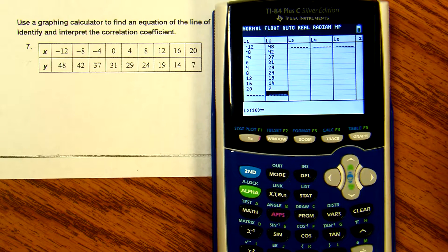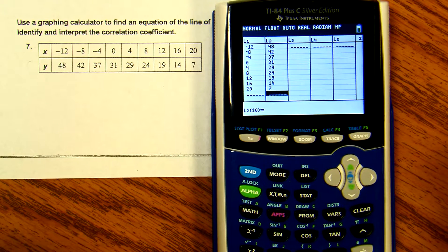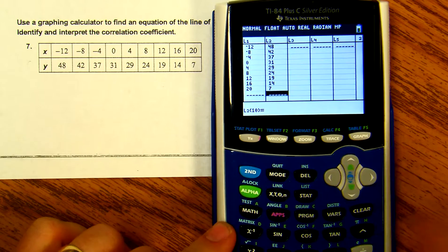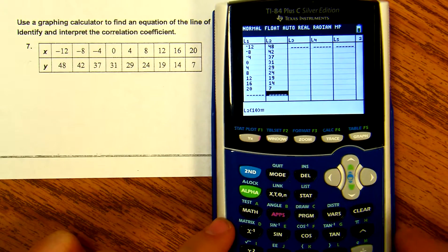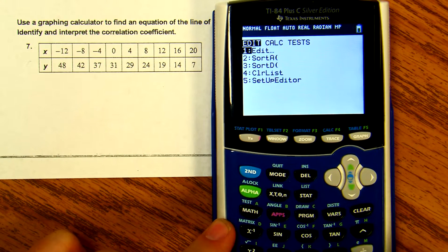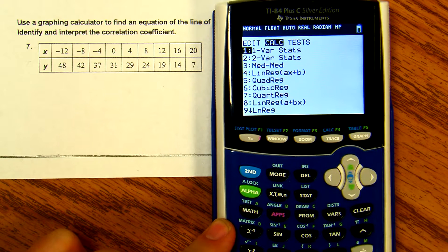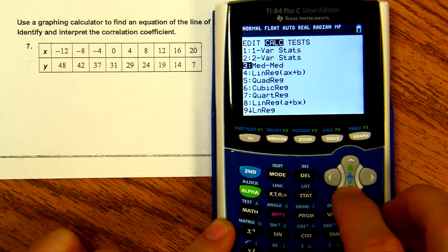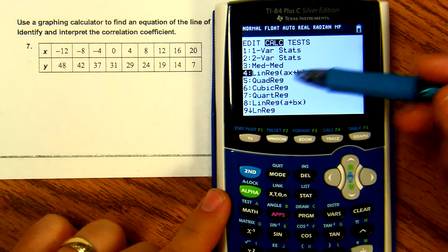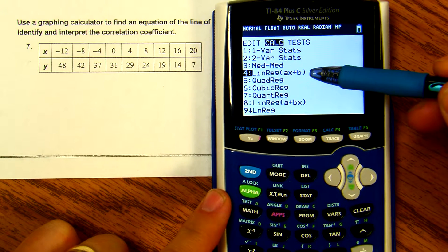Now hit STAT again, arrow over to CALC, and go down to number 4. You'll see LinReg or linear regression. This is the sample equation we're looking at - slope intercept form.